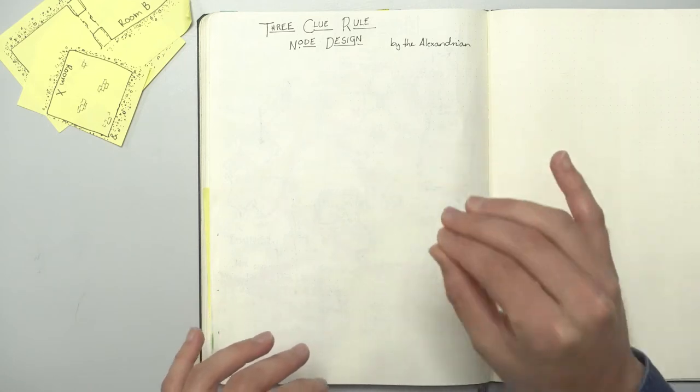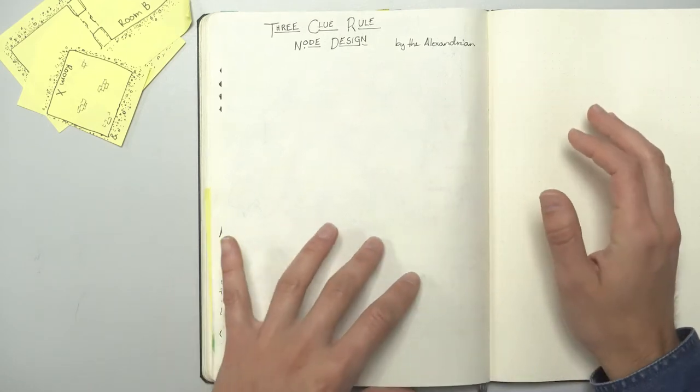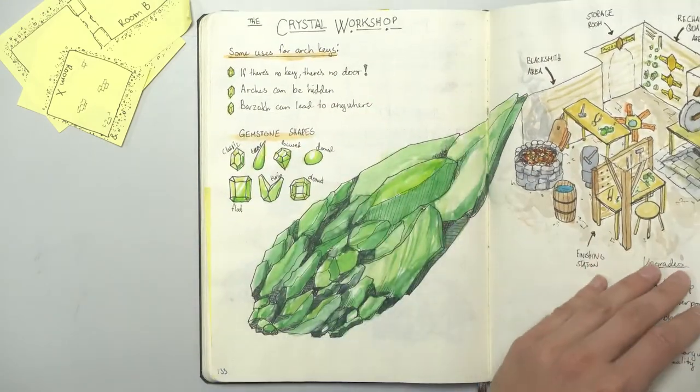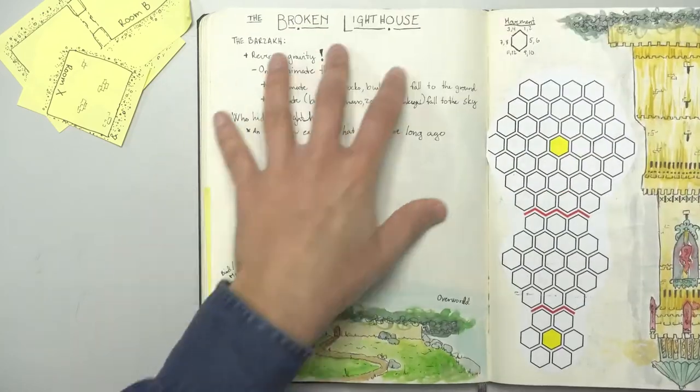And this is the big summary episode where we revisit the lower dungeons, the crystal workshop and the broken lighthouse.